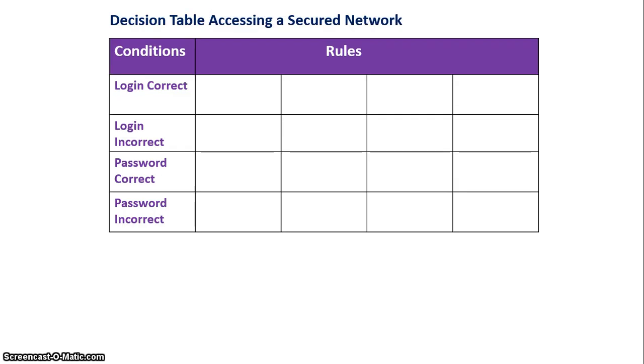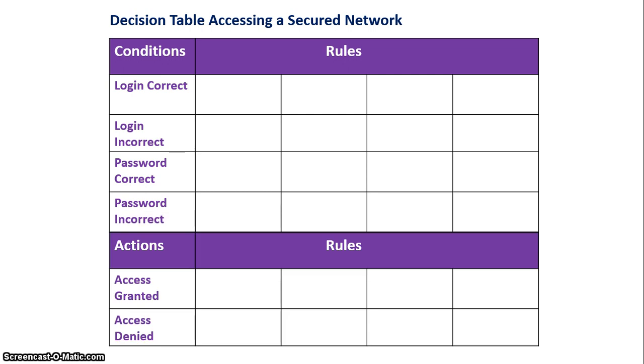We are now going to look at a decision table for accessing a secured network. In order to start our decision table, we need to first establish what conditions need to be met in this actual information system and what actions will take place for each condition.